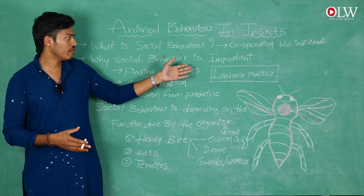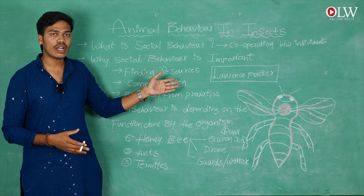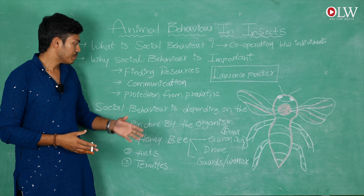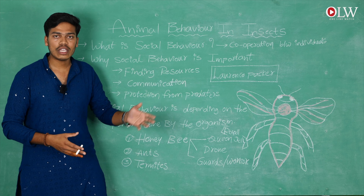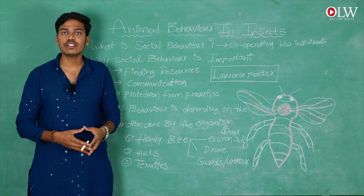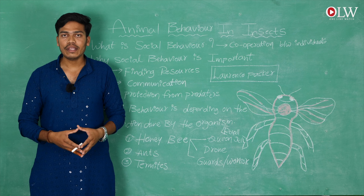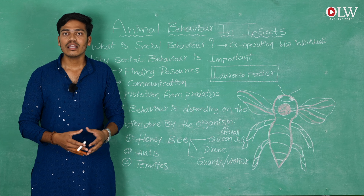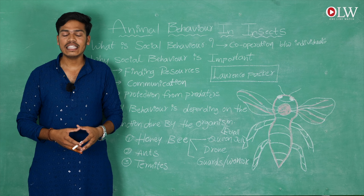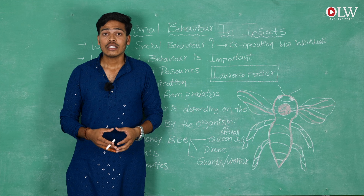Social behavior is important for finding resources and for communication. It also serves to provide protection from predators and to save their offspring — their babies — from predator attacks. That is why social behavior is important. Now we are going to discuss in detail the social behavior in insects.